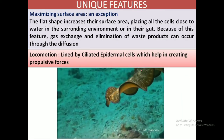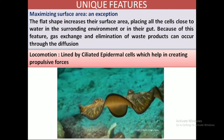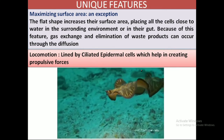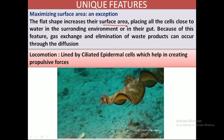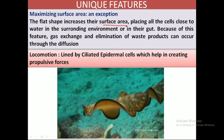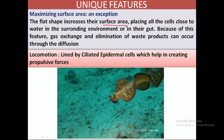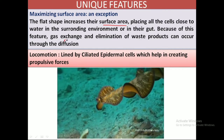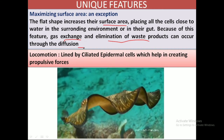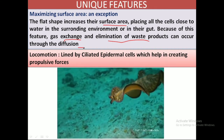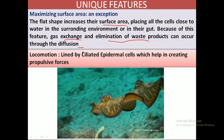The Platyhelminthes are provided with some unique features. The first is their capability of maximizing surface area. The flat shape of these worms helps in increasing their surface area, so that all cells come close to the surrounding media. Because of this proximity, gas exchange and elimination of waste products can occur easily through diffusion. So the maximization of surface area is a key adaptation in Platyhelminthes.